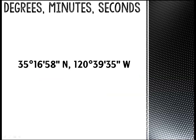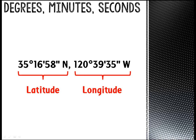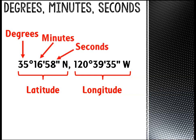A similar coordinate system is the degrees, minutes, seconds system. The latitude usually comes first and is followed by an N or an S, and the longitude comes second and is followed by a W or an E. Negatives and positives are not used for degrees, minutes, seconds. Although this coordinate system looks a lot like decimal degrees, the minutes, which are followed by a single quote, and seconds, followed by double quotes, indicate slightly different measurements than decimal degrees.